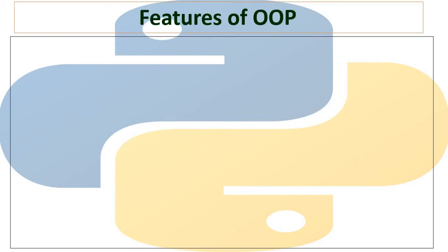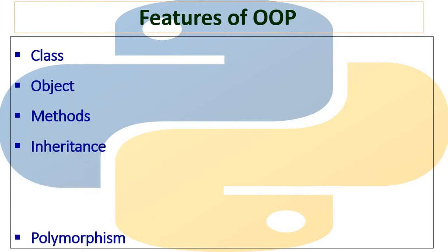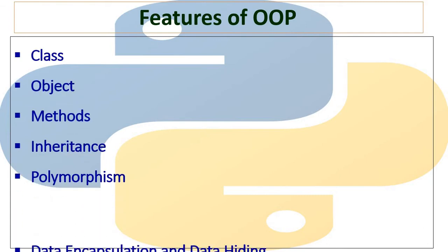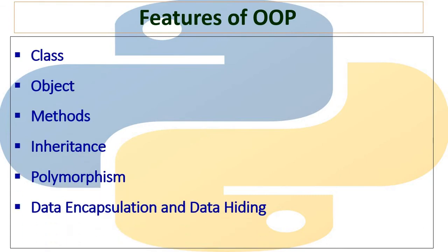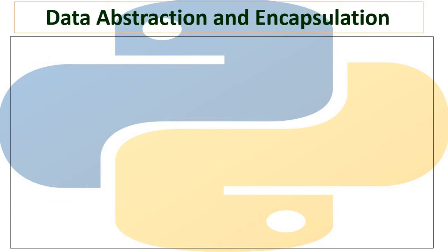Let's have a recap of features of Object-Oriented Programming: Class, Object, Methods, Inheritance, Polymorphism, Data Encapsulation, and Data Hiding. Today we will discuss the last features of Object-Oriented Programming — Data Abstraction, Data Encapsulation, and Data Hiding.